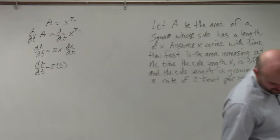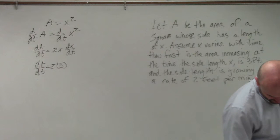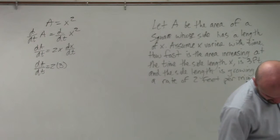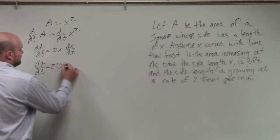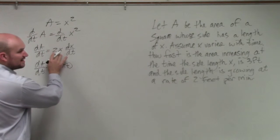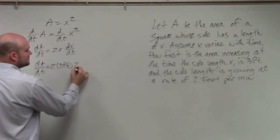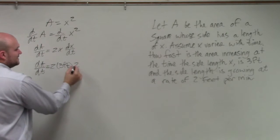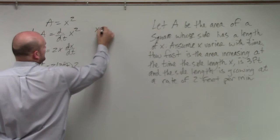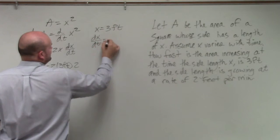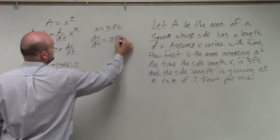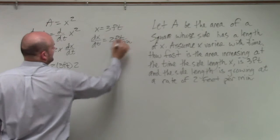So did I write in 3 feet? 3 feet. And then this is 2 feet per minute. So dX/dt is equal to—so basically I can just say X equals 3 feet, dX/dt equals 2 feet per minute.